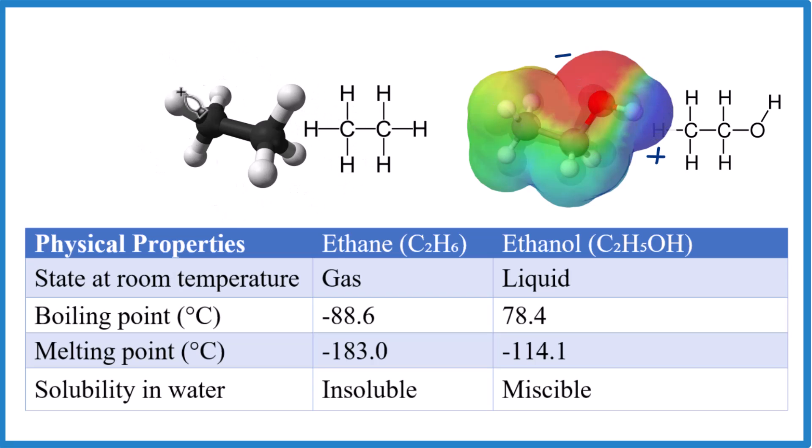For ethane, it's all the same - it would be all green. It's really not attracted much to other molecules. That's why we have a liquid, high melting point, and it dissolves in water because it's attracted to water molecules. That's probably the big difference.